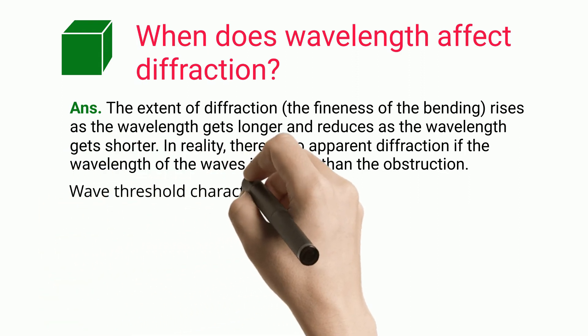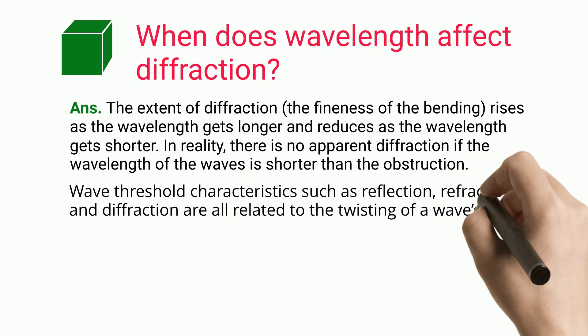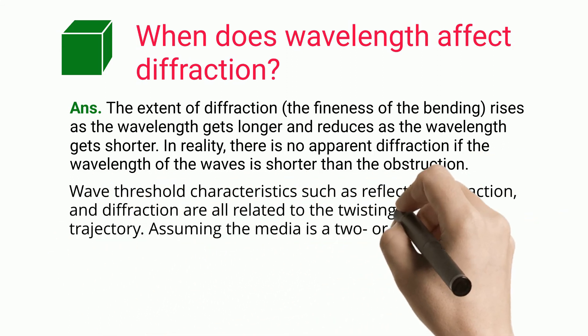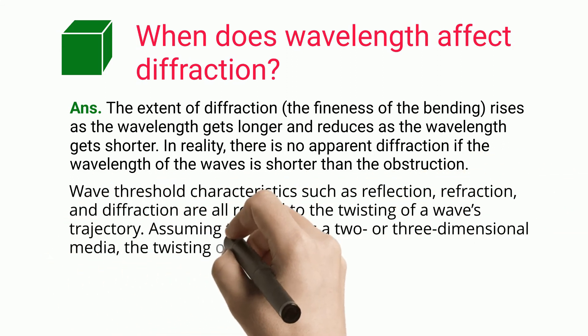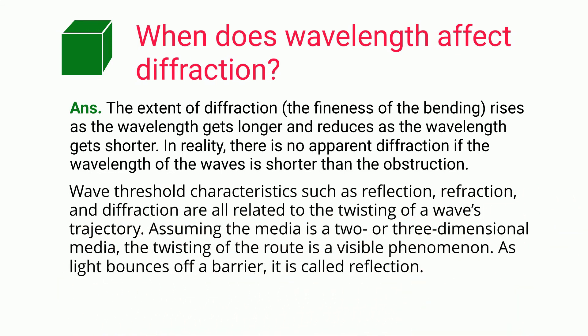Wave threshold characteristics such as reflection, refraction, and diffraction are all related to the twisting of a wave's trajectory. Assuming the media is a two- or three-dimensional media, the twisting of the root is a visible phenomenon. As light bounces off a barrier, it is called reflection.